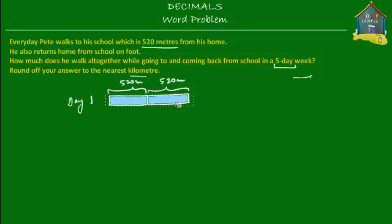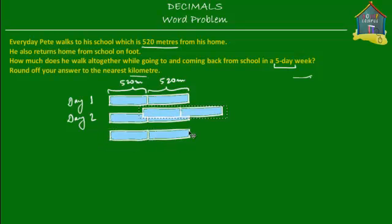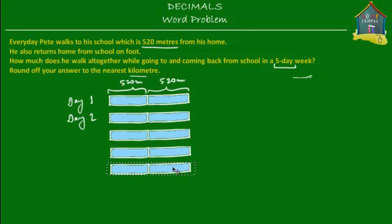Let's say it's Monday. On Tuesday he again walks the same amount of distance — so this is day two, and he walks the same as day one. Then on day three, again the same amount. Day four, again the same, and day five, again the same. So this is day one, day two, day three, day four, and day five.